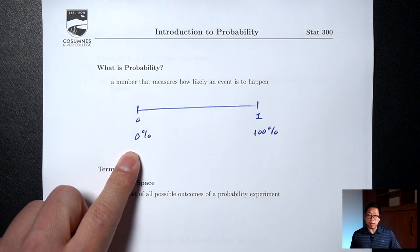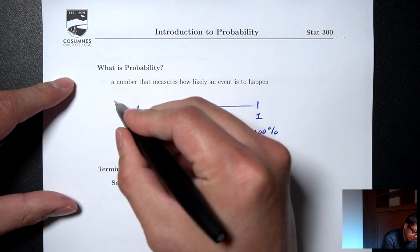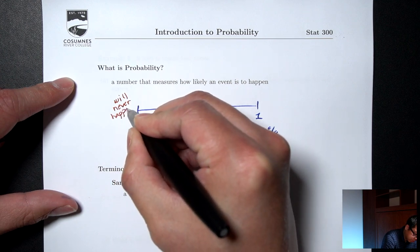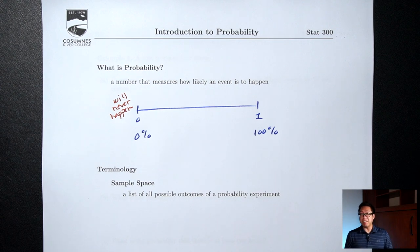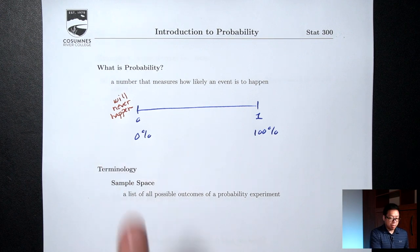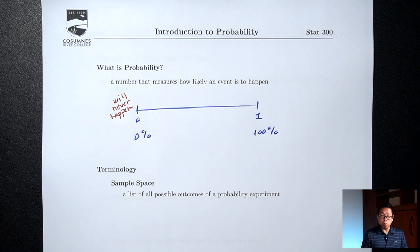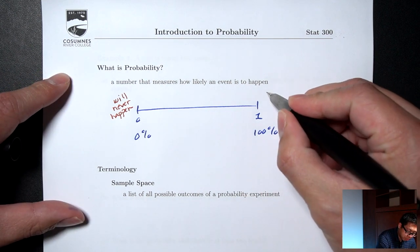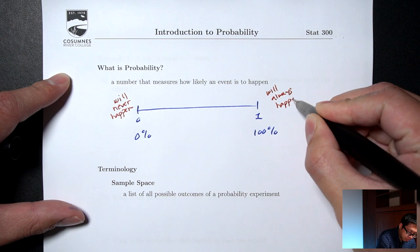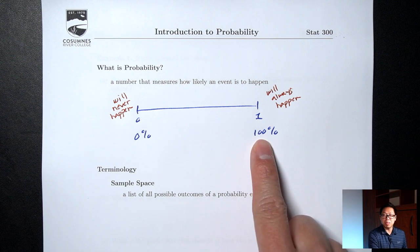If something has a 0% chance of happening, that means it will for sure never happen. If you ask me, 'Are you going to skydive?' I tell you 'Nope, 0%.' That means it's never going to happen. If something has a 100% chance of happening, that means it will for sure happen. If you ask me, 'Are you going to the party this weekend?' I say, 'Yeah, I'll be there 100%.' That means I will for sure be there.